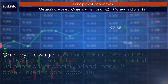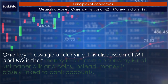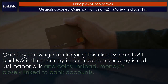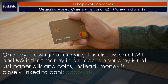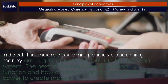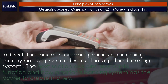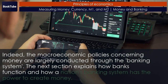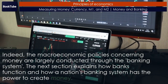One key message underlying this discussion of M1 and M2 is that money in a modern economy is not just paper bills and coins. Instead, money is closely linked to bank accounts. Indeed, the macroeconomic policies concerning money are largely conducted through the banking system. The next section explains how banks function and how a nation's banking system has the power to create money.